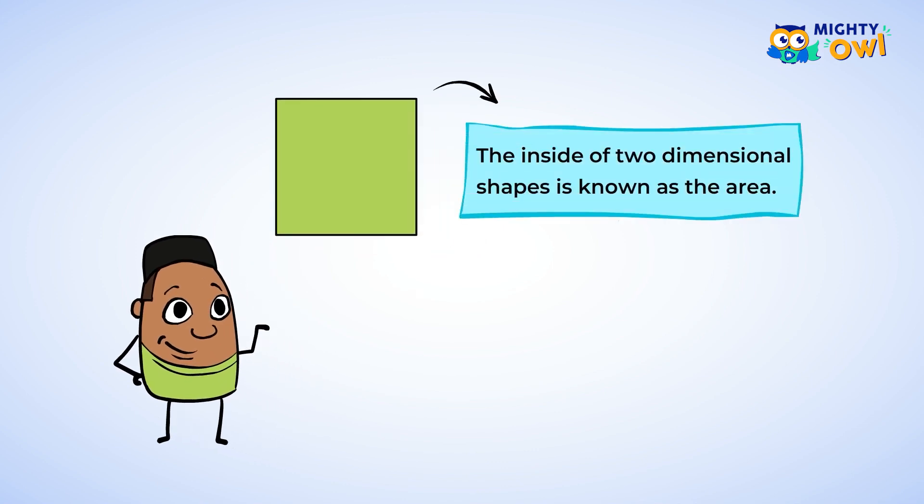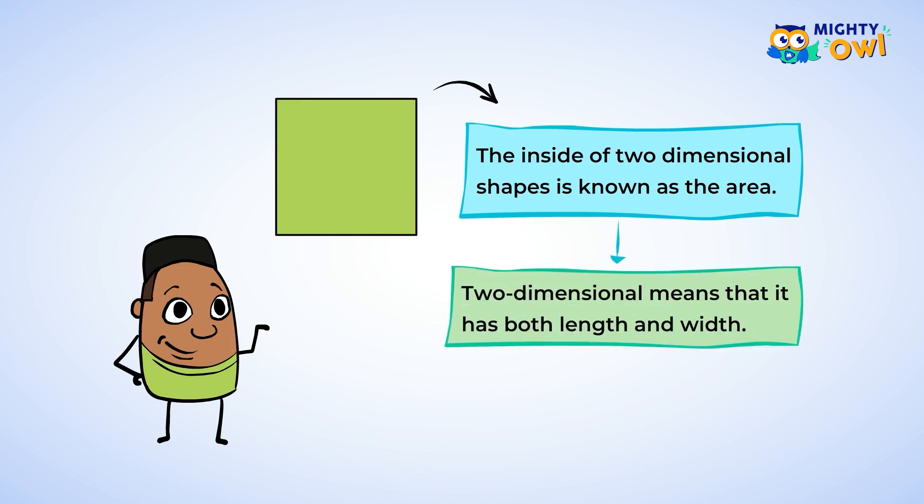The inside of two-dimensional shapes is known as the area. Two-dimensional means that it has both length and width. Area is measured in square units.